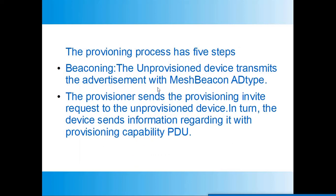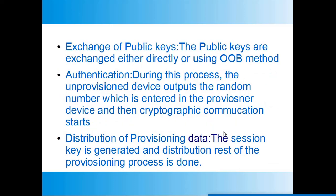The first step is that the unprovisioned device transmits an advertisement with the mesh beacon AD type or mesh beacon flag set — this advertisement type is specially designed for Bluetooth mesh. After receiving the beacon, the provisioner sends a provisioning invite request; the device responds with its provisioning capabilities, such as whether it supports a display or keyboard. Next, an exchange of public keys takes place, either directly or using an out-of-band method such as NFC.